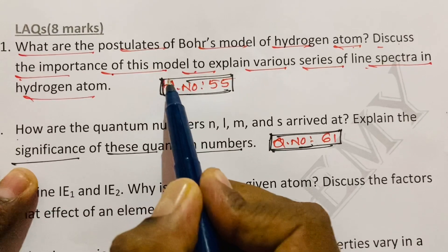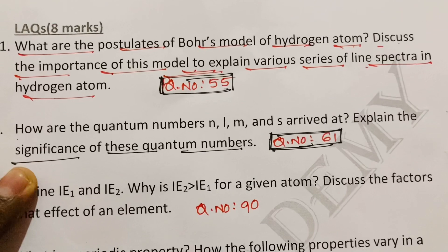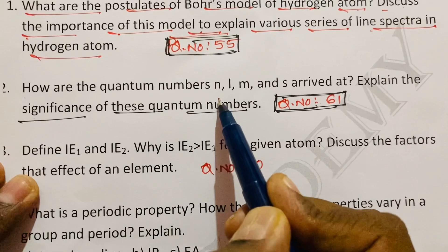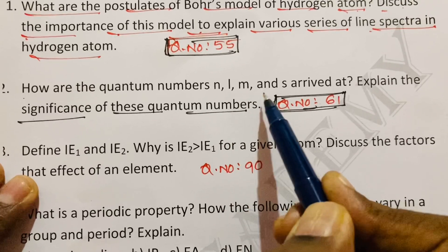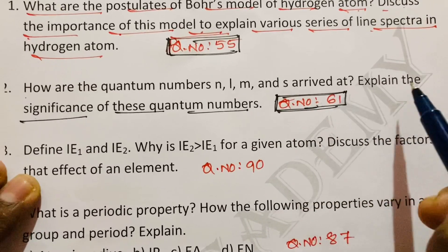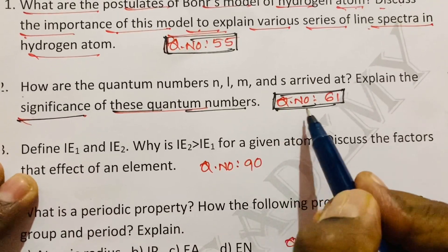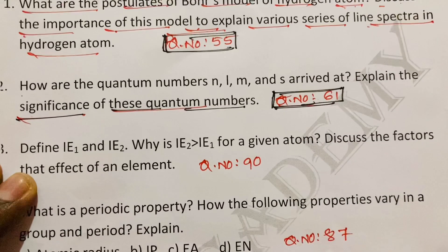That is question number 55 from Telugu Academy textbook or other material also. Next question. How are the quantum numbers n, l, m and s arrived? Explain the significance of these quantum numbers. That is question number 61 from Telugu Academy textbook.